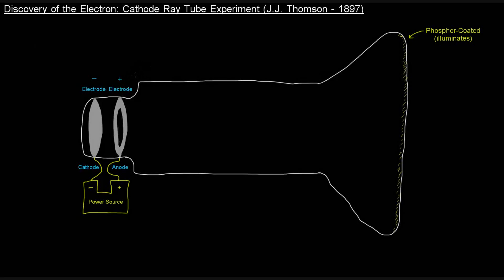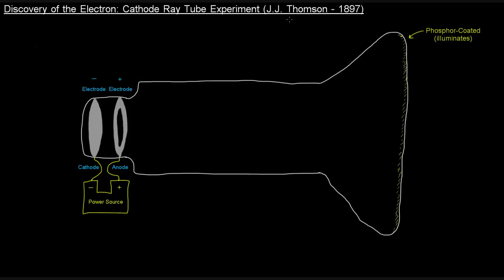Okay, so in this video we're going to talk about the discovery of the electron by J.J. Thompson in 1897 via the cathode ray tube experiment.